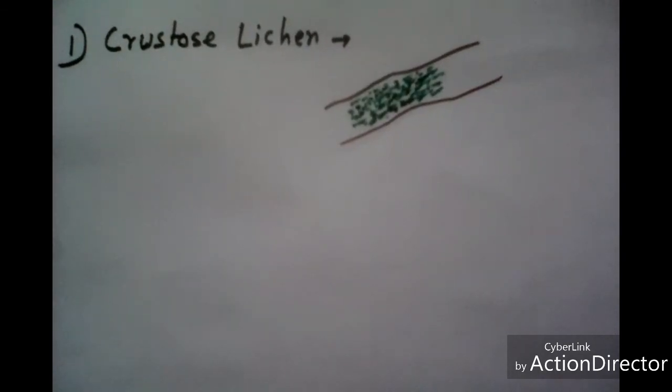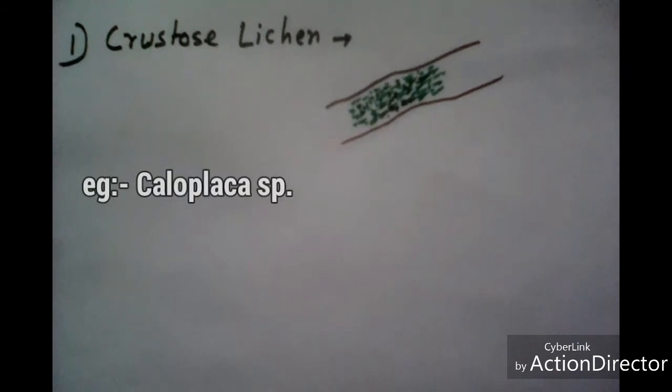Next type is foliose lichen. When lichens are lobed, flat, and leafy-like structure, this type of lichen easily separates from the substratum.